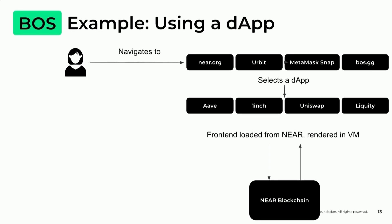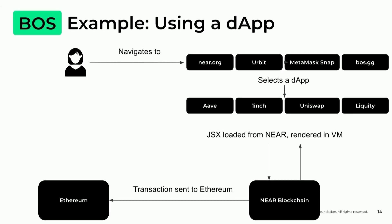Next, the user might decide to do a trade — say, swapping USDC for ETH. A transaction is issued to the Ethereum blockchain using an RPC request. So you have the interface loaded from Near, and the user sends a transaction to Ethereum. You can imagine that Ethereum can be any blockchain — this is entirely blockchain agnostic. Right now there's really good support for EVM blockchains, but we already have teams working on Cosmos support, and we expect any popular blockchain will have support for the blockchain operating system before too long.